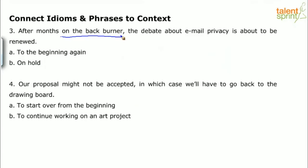The answer for 'on the back burner' is option B — on hold. Your clue in the context is 'after months,' suggesting change happens after a period of time. For the fourth example: 'Our proposal might not be accepted, in which case we'll have to go back to the drawing board.' Option A — 'to start over from the beginning' — is correct, because if the proposal is not accepted, they have to start all over again.